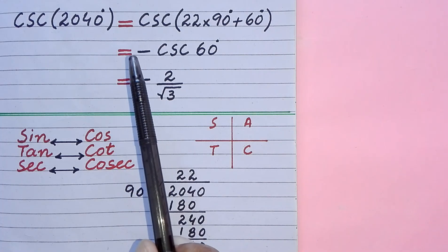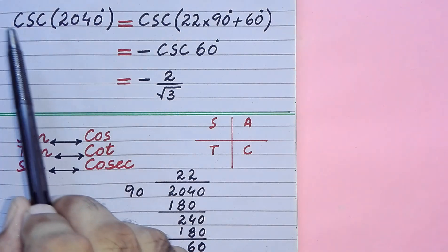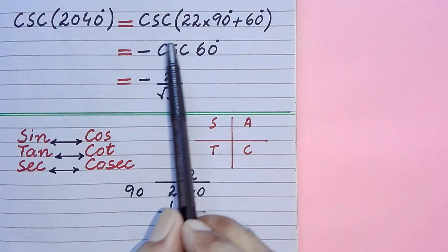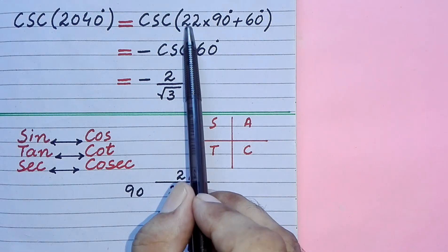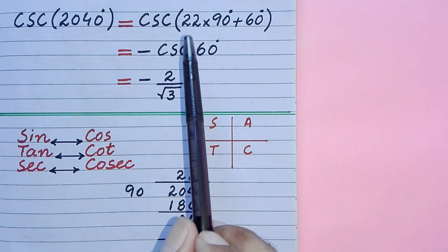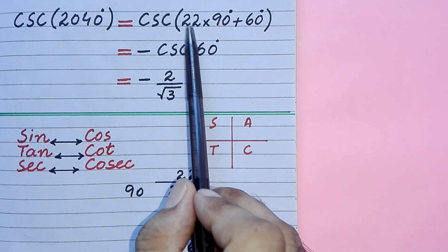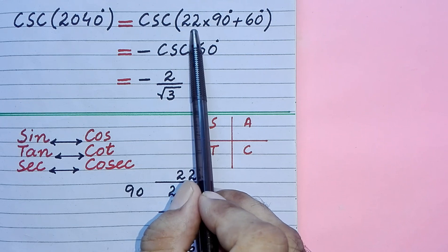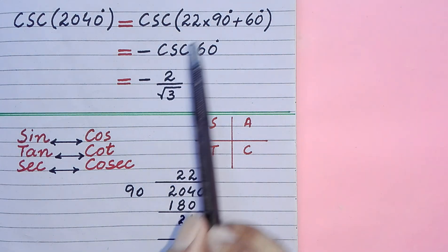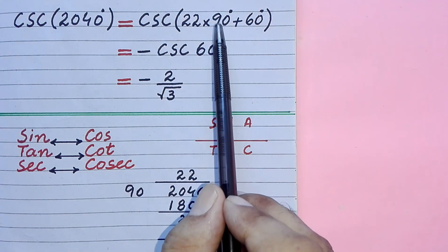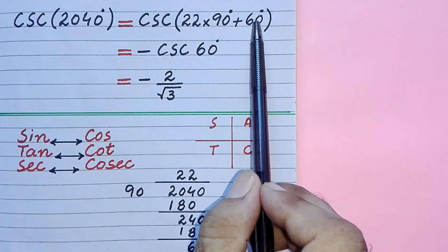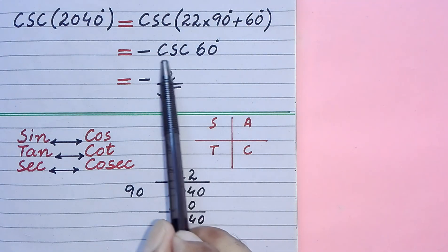Second, we decide about the status of the given trigonometric function with the help of the multiple of 90 degrees. As the multiple of 90 degrees in this case is an even number, the function does not change. We drop 90 degrees and its multiple and take only the extra part.